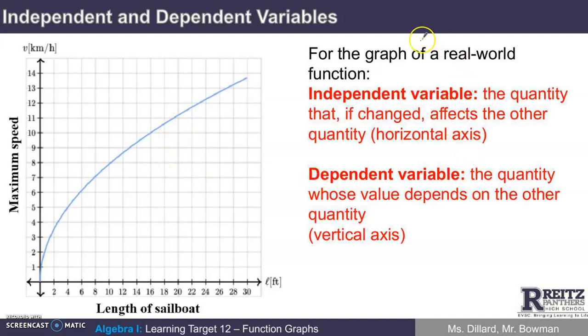And for the graph of a real-world function, we say the independent variable is the quantity that, if changed, affects the other quantity. It's also the one that we'll always put on the horizontal axis. In this example here, on the graph shown, the length of the sailboat is the independent variable.